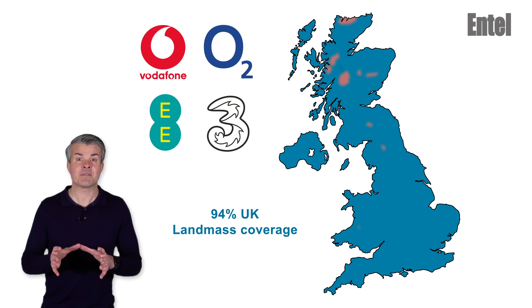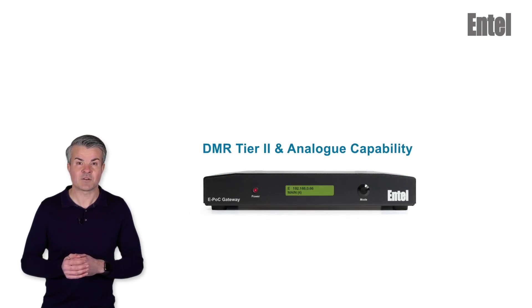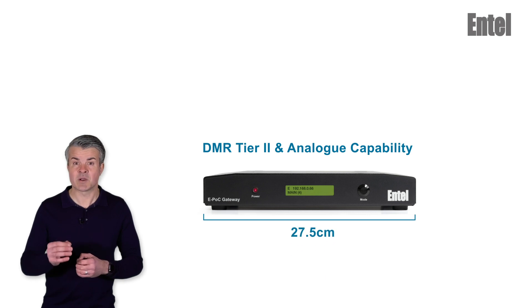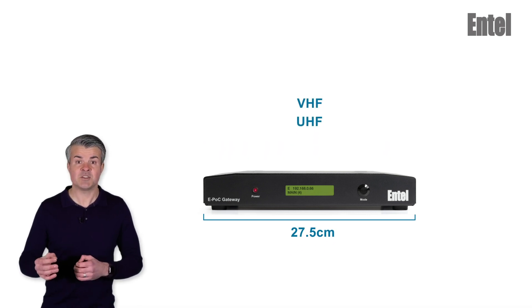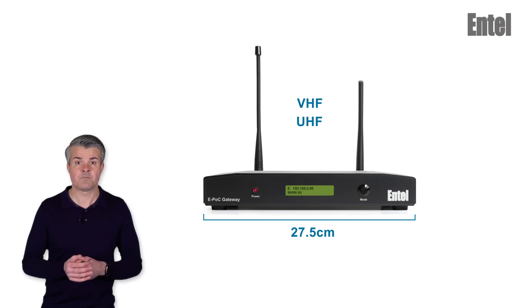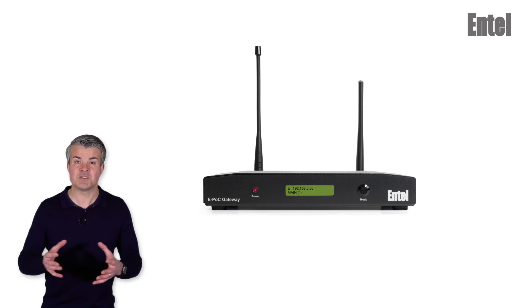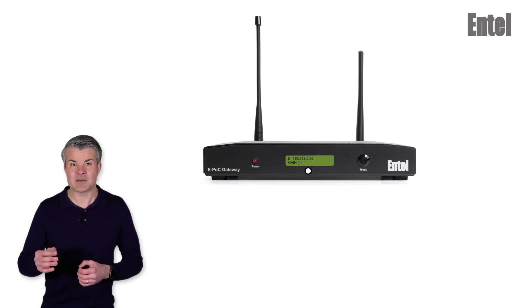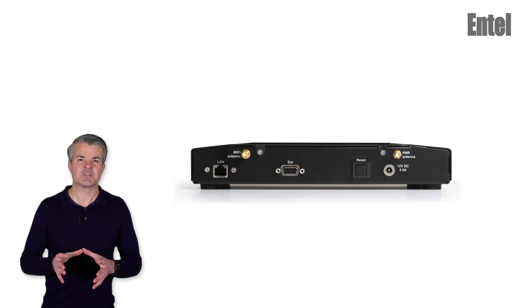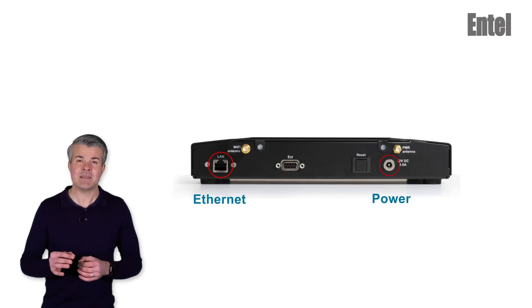Let's have a closer look at the gateways. Firstly, the version with a built-in DMR tier 2 and analogue capability. It's a simple, single box solution in a nice slim and compact enclosure. It's available in VHF and UHF, and you get everything you need including WiFi and PMR antennas. It's a plug and play solution, ensuring it's ready for use in just a few minutes. It has an LCD display to indicate various statuses, including IP address and POC channel. There are two connections on the back: power and ethernet.